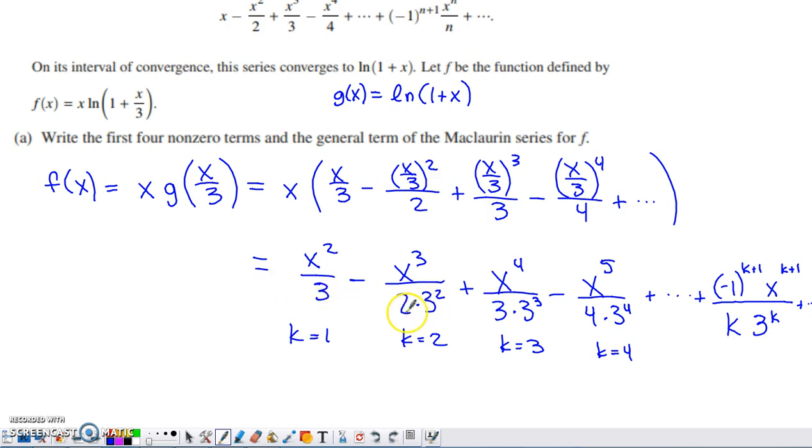It's a little more obvious when you look at the rest of these terms: 2 times 3 squared, 3 times 3 to the third, and so on. So I've got a coefficient of k in the denominator. And then I have 3 raised to the first power on k equals 1 term, second power on the term that's indexed with 2.